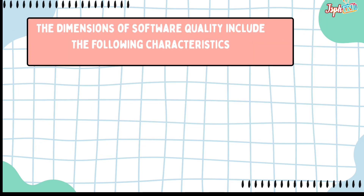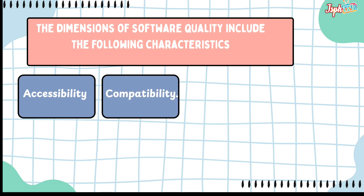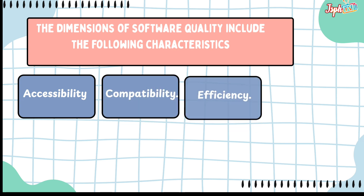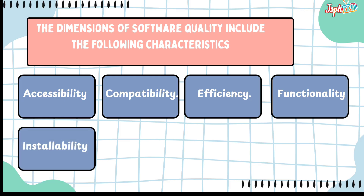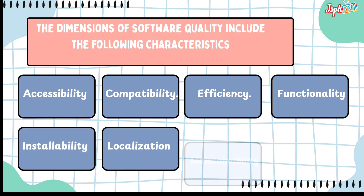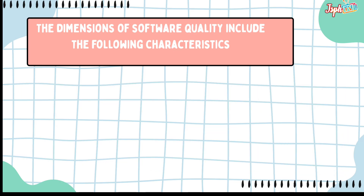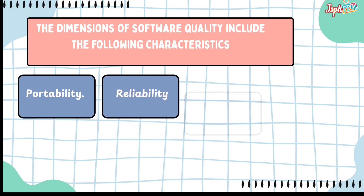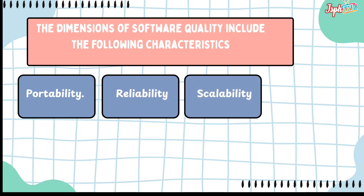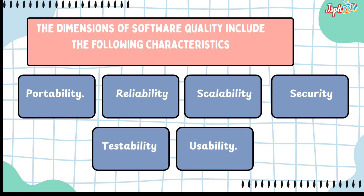The dimensions of software quality include the following characteristics: accessibility, compatibility, efficiency, functionality, installability, localization, maintainability, performance, portability, reliability, scalability, security, testability, and usability.